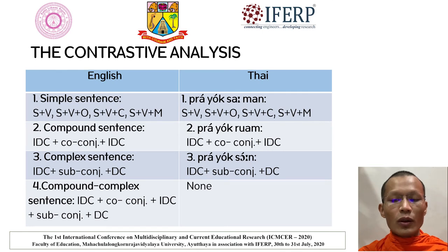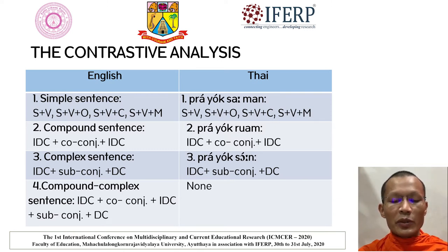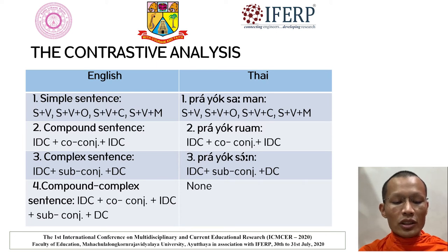First, Simple Sentence, or Prayok Saman. The structure is subject plus verb, or subject plus verb plus object, or subject plus verb plus modifier. Second, Compound Sentence, or Prayok Ruum. The structure is independent clause plus coordinating conjunction plus independent clause. Third, Complex Sentence, or Prayok Son. The structure is independent clause plus subordinating conjunction plus independent clause, but Thai does not have this in the same way.